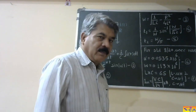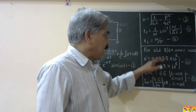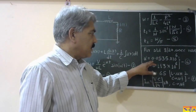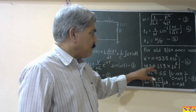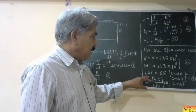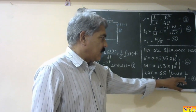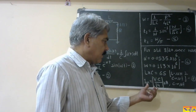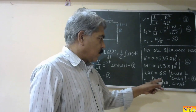For generating the standard 8 by 20 microsecond wave, the constants are: alpha = 0.0535 × 10⁶, omega = 0.113 × 10⁶ (equation 6). The product L × C = 65, where L is in microhenries and C is in microfarads (equation 7). The peak value of the current is given by: Im = V × C / 14, in kiloamperes, where V is in kilovolts and C is in microfarads.